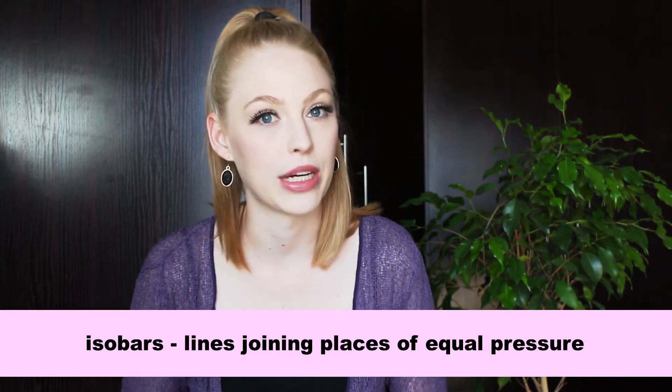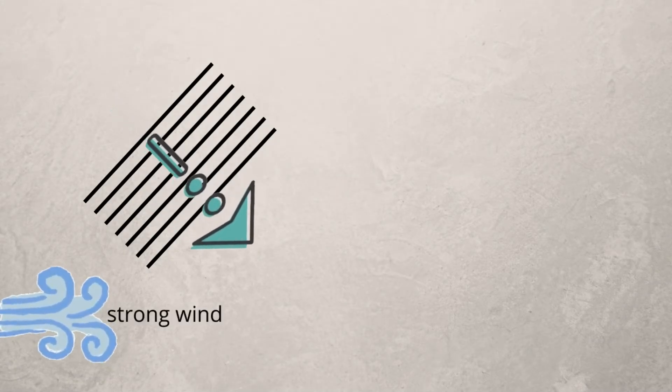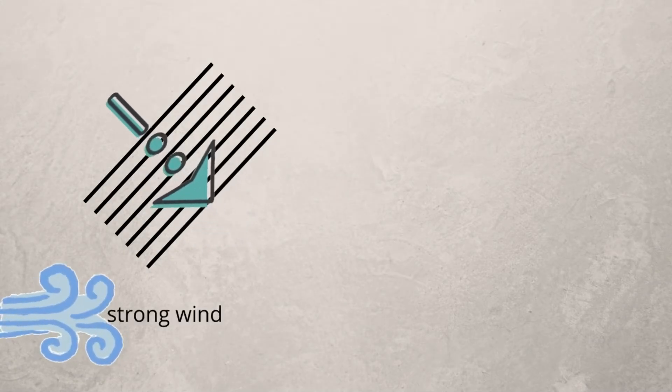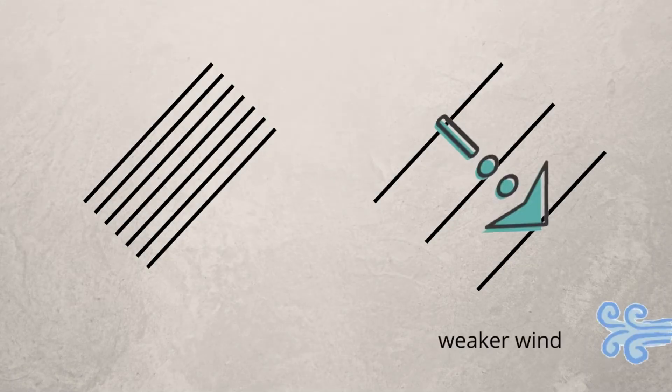If we are looking on a weather map or on a synoptic chart, we can use isobars — which are lines joining places of equal pressure — to help us determine what the pressure gradient force will be. If the isobars are closer together, the pressure gradient force is steeper and therefore the wind is stronger. If the isobars are further apart, the wind will be weaker.